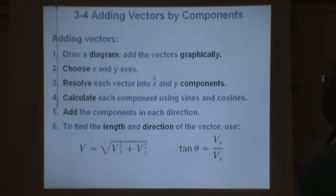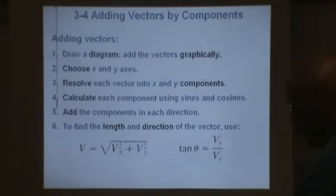Here is a summary of how you actually add vectors using the component method. We're going to draw a diagram, add the vectors graphically, choose x and y axes, resolve these vectors into x and y components, calculate these components using sines and cosines, add the components in each direction, find the length and the direction of the vector. Use this to find the magnitude and this to find the direction.